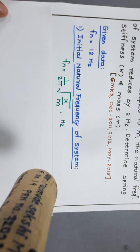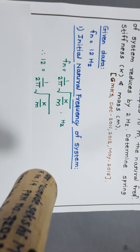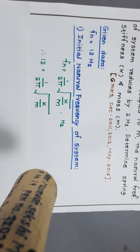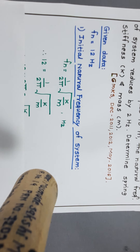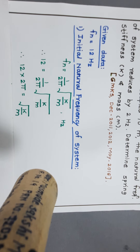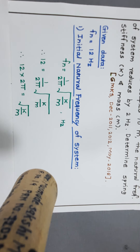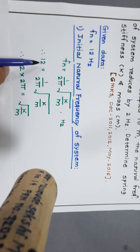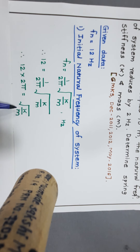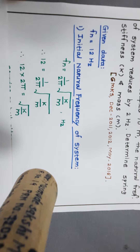After substituting, we put the first value of natural frequency: 12 = (1 / 2π) × √(k/m). Solving this, 2π is at the denominator, so once it crosses the sign it becomes 12 × 2π = √(k/m).